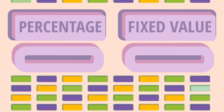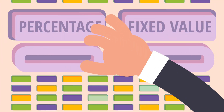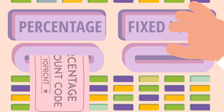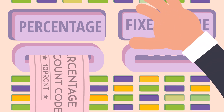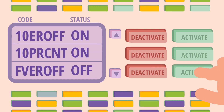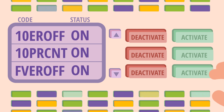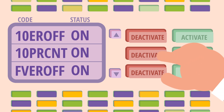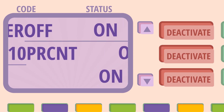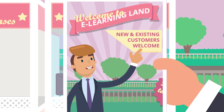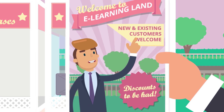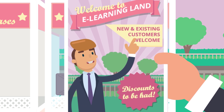It's quick and easy to create a percentage or a fixed value discount code from your administration panel. You can make time-limited offers by activating and deactivating codes with the click of a button. This can be an excellent way to promote courses to new and returning clients.